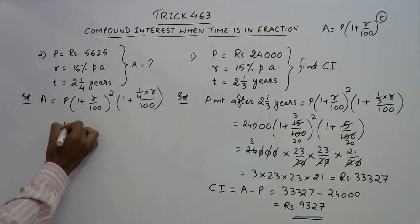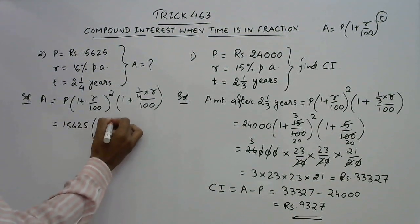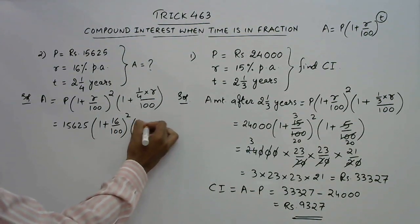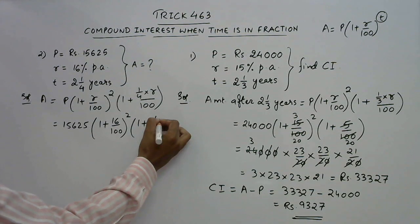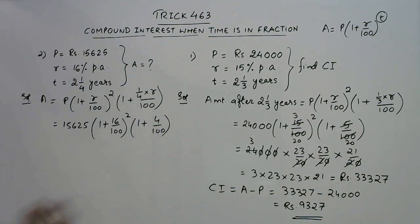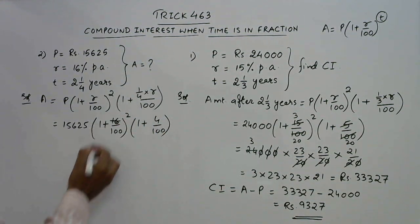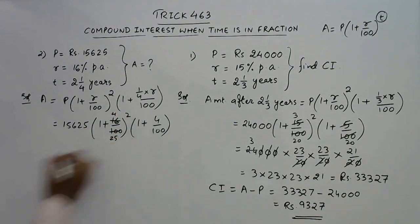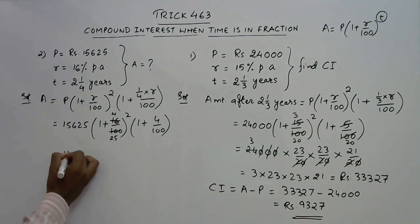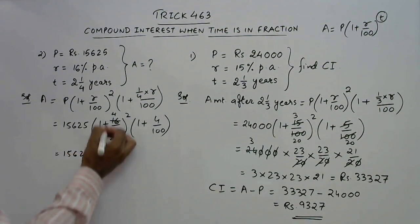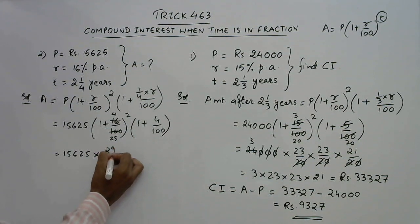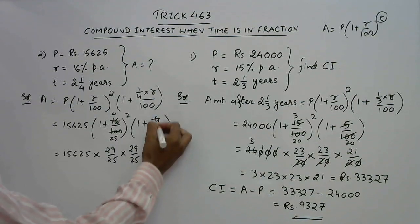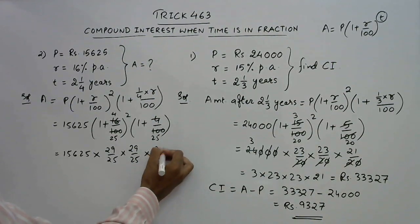So this is 15625 into 1 plus r is 16, 16 power 2, and 1 plus 1/4 of 16 is 4 by 100. Cancel this 4, 4 times and 4, 25 times. So this is 15625 into 29 by 25, 29 by 25 and 4 cancels 25 times, so 25 plus 1, 26 by 25.